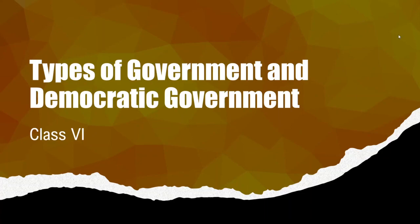Hello everyone and welcome to the second session of the lesson, Types of Government and Democratic Government. In the first session of this lesson, we discussed what is government, what are the functions of the government. Then we talked about the three different levels of government, that is central government, state government and the local self-government.